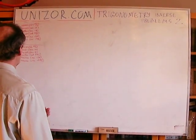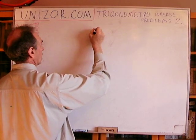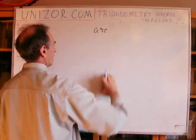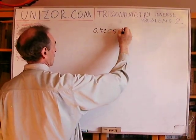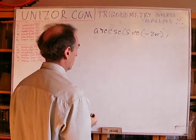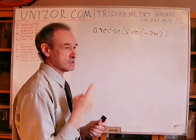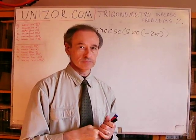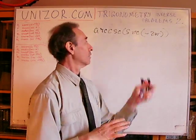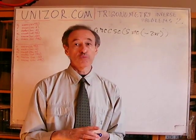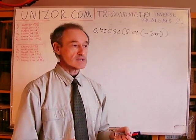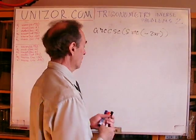Next: arc cosecant of secant of minus 2π. Secant is 1 over cosine. 2π is the period of the cosine, so the cosine of minus 2π is the same as cosine of 0 — I just added 2π, the period, to the argument. Cosine of 0 is 1, so secant of minus 2π equals 1.